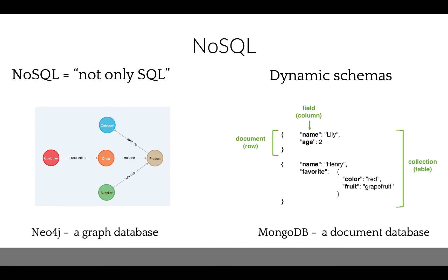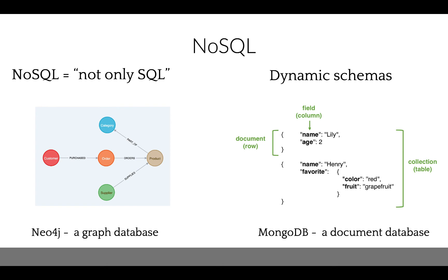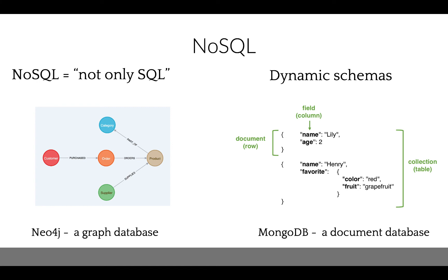SQL databases require data to be organized in a structured way. What if we cannot organize our data in a structured way? Then we should design our database as a NoSQL database. NoSQL stands for 'not only SQL' and these are often referred to as non-relational databases that come in all different shapes and sizes. Their main characteristic is that they all have dynamic schemas, meaning the schema doesn't have to be locked in up front. The most popular NoSQL database is MongoDB, which is more specifically a document database. The data is no longer in a structured table — the number of fields varies for each document, and each document is similar to a row.